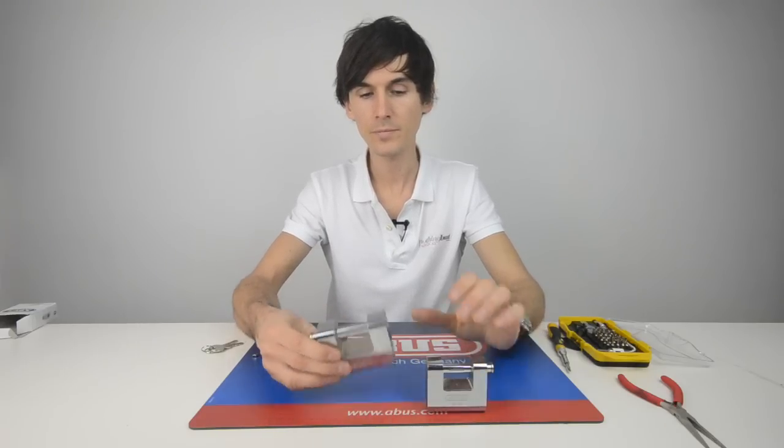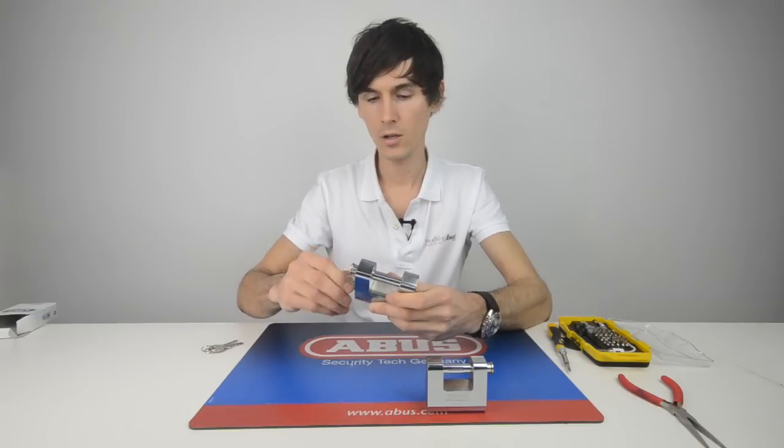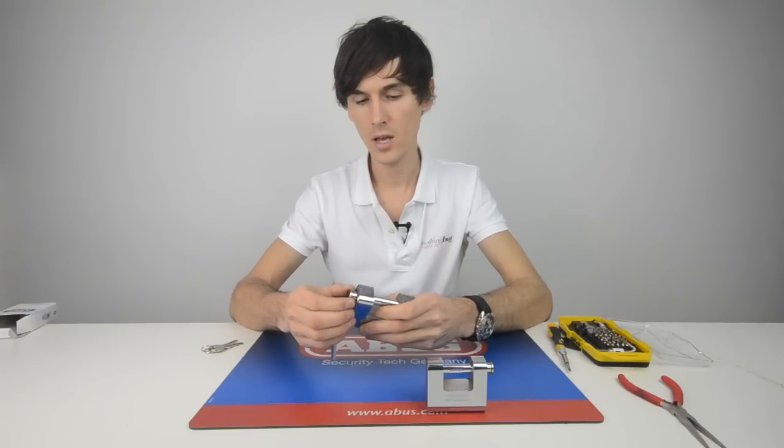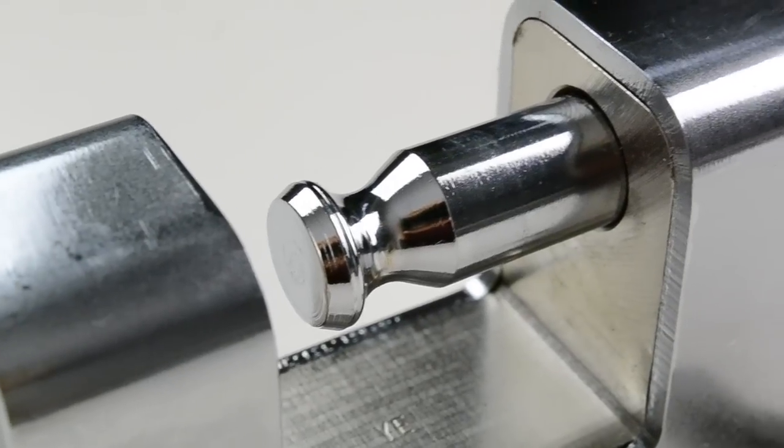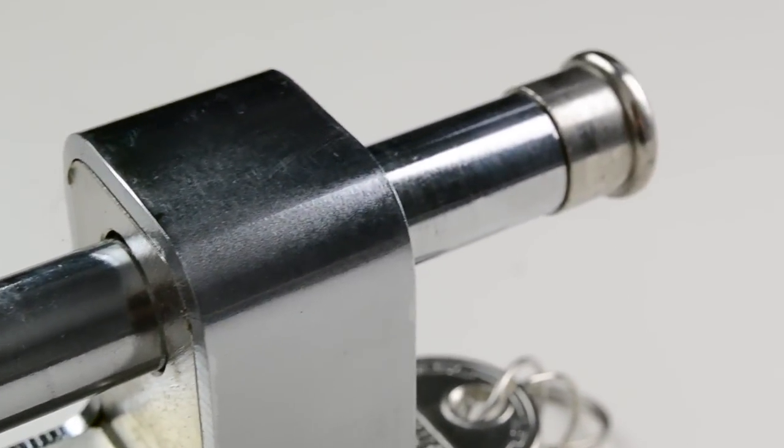The shackles are also hardened steel, and you can see how the bar slides out of here, and it is locked using a ball bearing locking system at the end.